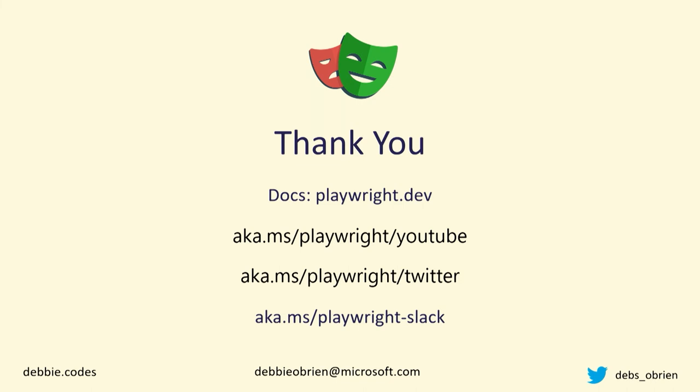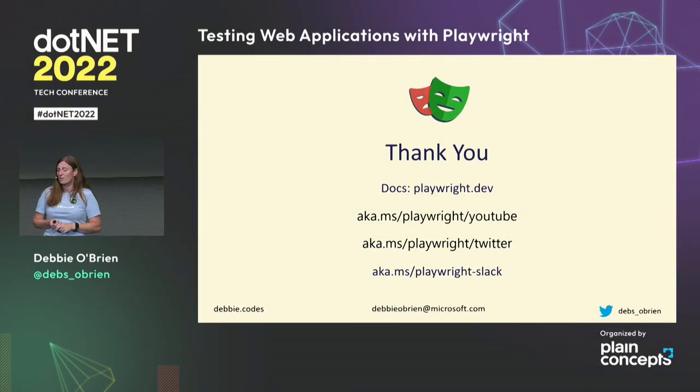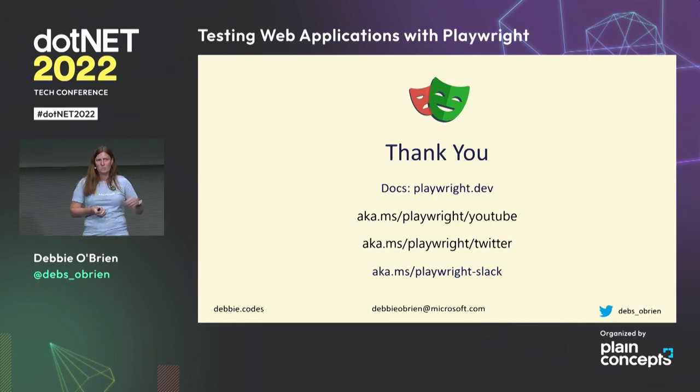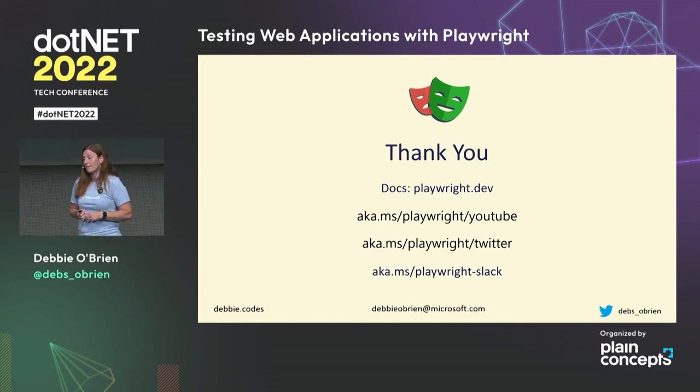These are our links: the docs, the YouTube channel, the Twitter — we'll create more videos very soon. The Playwright Slack is where you can ask difficult technical questions; the team hangs out there and answers everything. If you want to contact me specifically, my email is debbieobrien@microsoft.com, or send me a Twitter DM. You can also go to debbie.codes, where I have blog posts on Playwright. Thank you very much.